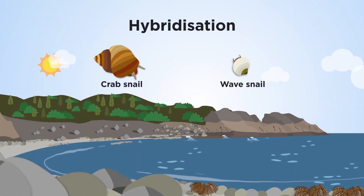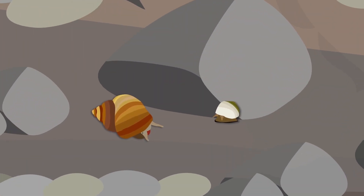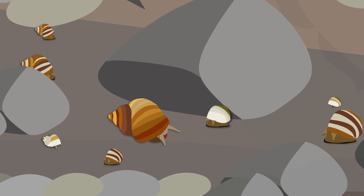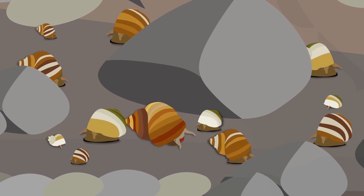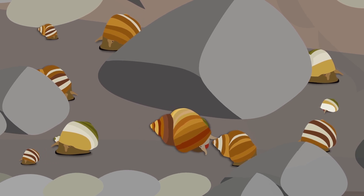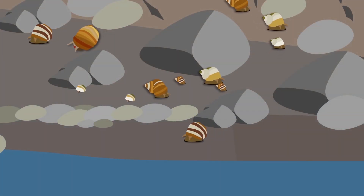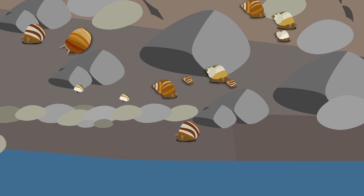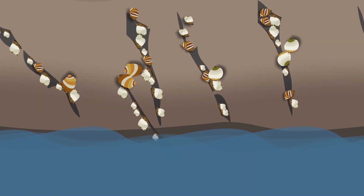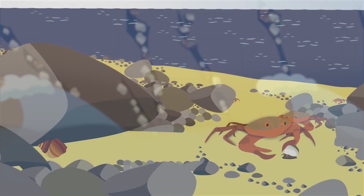Mating between crab and wave snails opposes local adaptation. Called hybridisation, this occurs at habitat boundaries where the two populations meet. It's costly because it produces poorly adapted intermediate offspring. It slows down speciation, as a mixture of traits makes the snails vulnerable in either environment — they are poorly adapted.